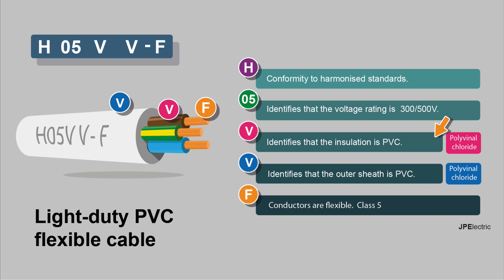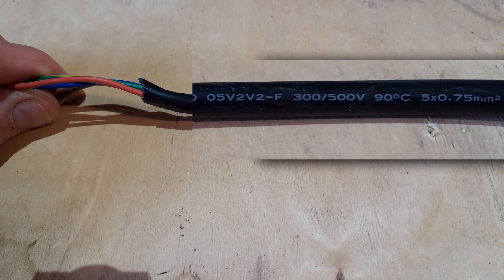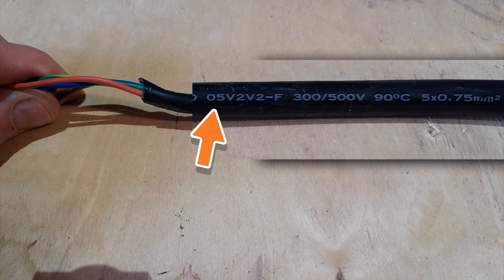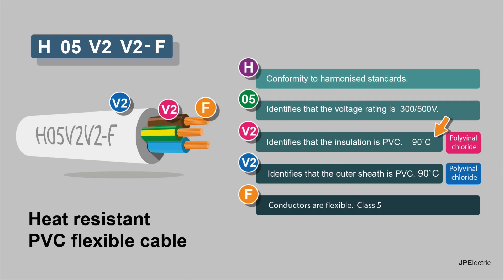This is the cable from a two-part valve. Its code is 05V2V2-F. Notice there's no H. The voltage rating is 300–500 volts, so we know that's 05. V2V2 — and we've got a clue here: 90°C — means this is heat-resistant PVC cable, so the insulation and the outer flex are heat-resistant to 90°C, and the conductors — all five of them — are flexible. It's not clear why there's no H; the valve was made in the EU but the cable may have come from elsewhere. It's often used for connecting up storage heaters, immersion heaters, or any environments where there might be additional heat.